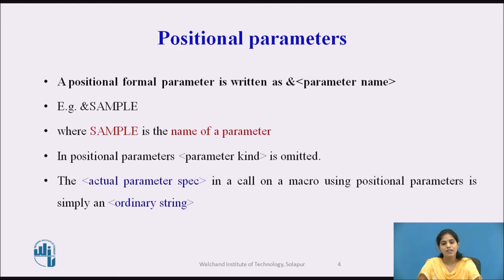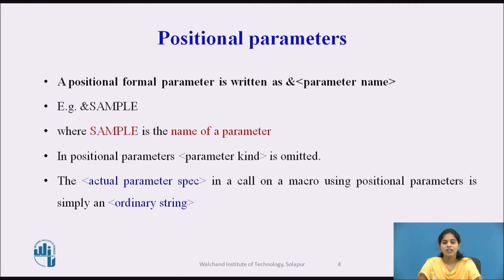First we see the positional parameters. A positional formal parameter is written as ampersand followed by the parameter name — for example, &SAMPLE, where SAMPLE is the name of the parameter. In a positional parameter, the parameter kind is omitted. The actual parameter specification in the macro call is simply an ordinary string.